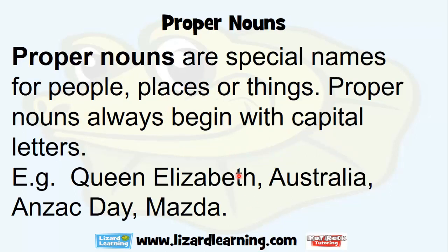Proper nouns are special names for people, places, or things. Proper nouns always begin with capital letters. Examples: Queen Elizabeth, Australia, Anzac Day, Mazda — a special name for a type of car — and so on.